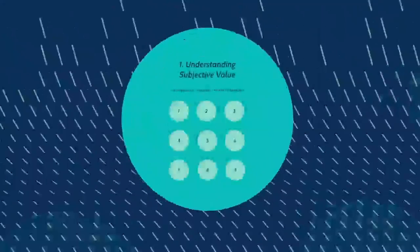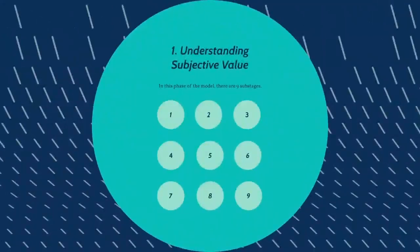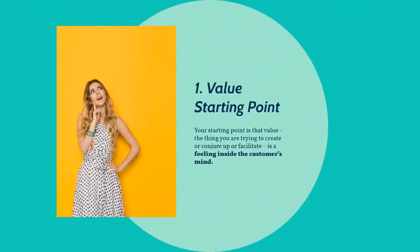In the first phase of the model — subjective value understanding — there are nine sub-stages. One: your starting point is that value, the thing you are trying to create or conjure up or facilitate, is a feeling inside the customer's mind. Therefore, it's subjective. You don't determine what it is — your customer does. It's personal to them and their individual context, and your role is observer and interpreter.